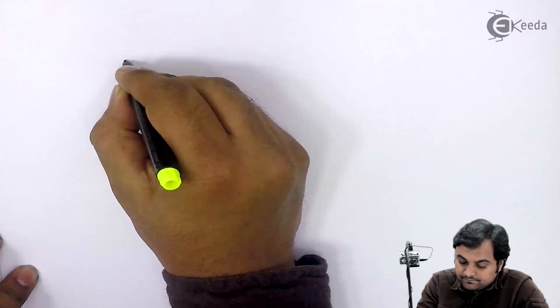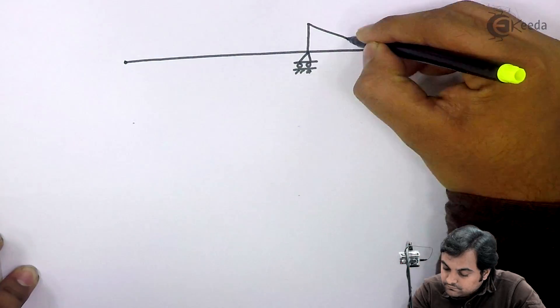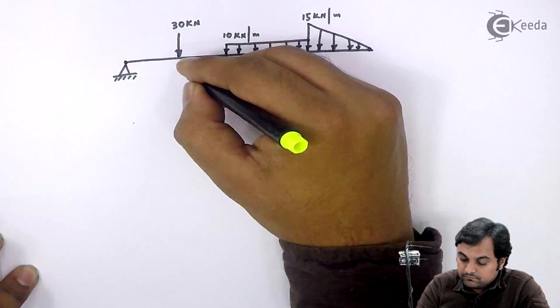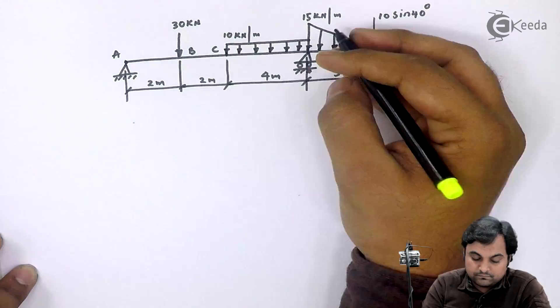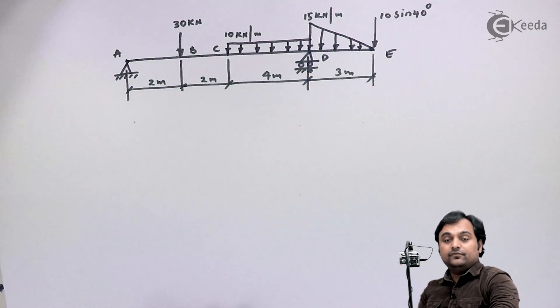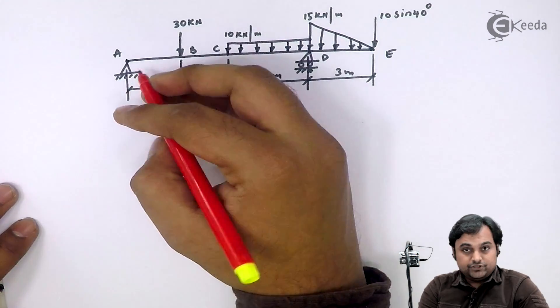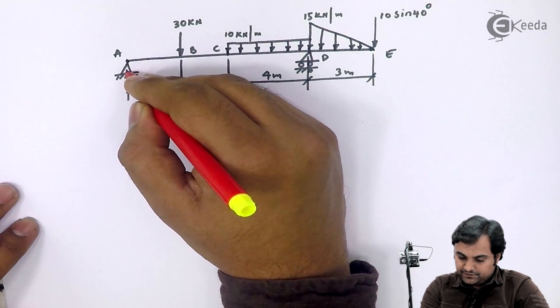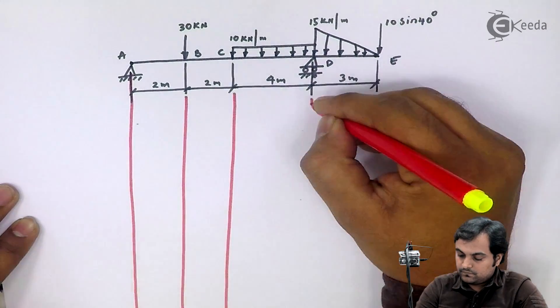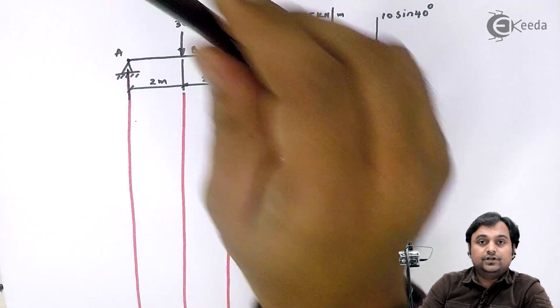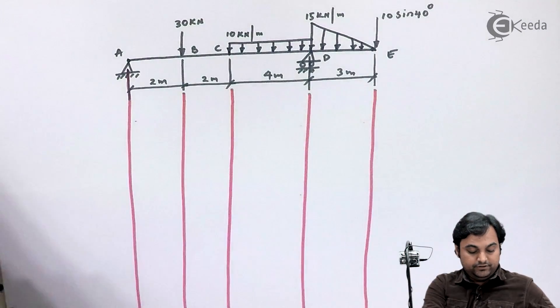For drawing the shear force diagram, I will have to draw the given beam once again. Here I have the beam which is given — I will be projecting the points downwards. The length of the shear force diagram should be equal to the length of the beam.